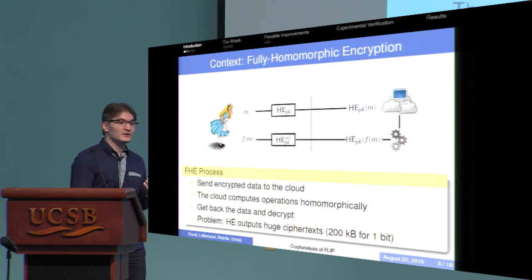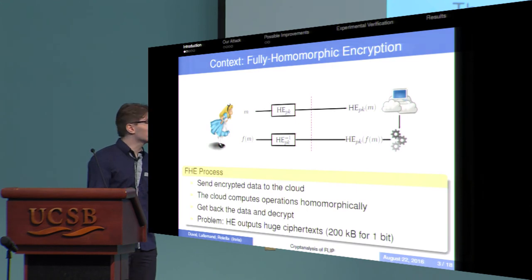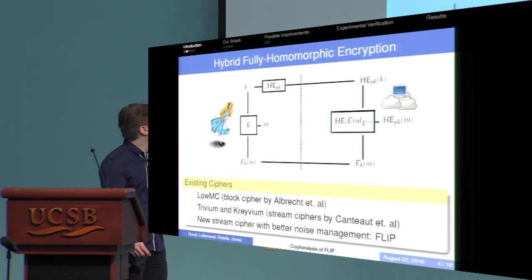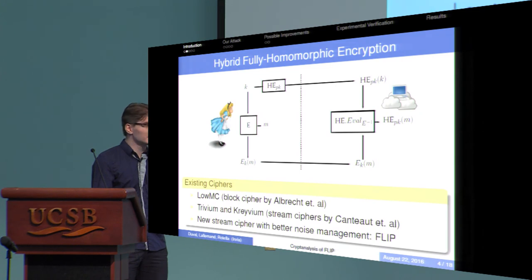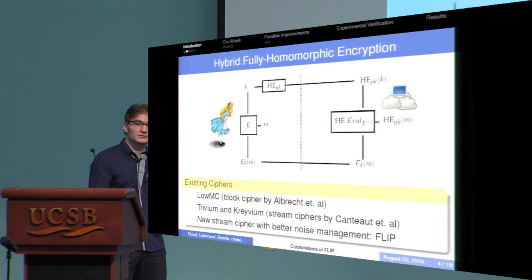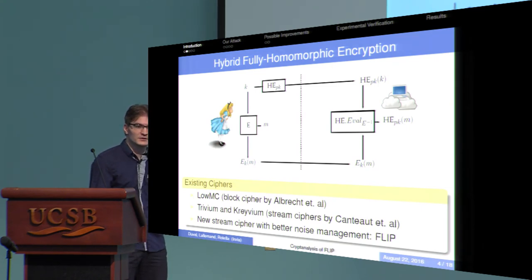There is one problem: the homomorphic encryption algorithms we have output huge ciphertexts. So if you have many messages or big messages, it's not going to be very practical. One way to go around this is to add a symmetric encryption on top of it. What you encrypt using the homomorphic encryption algorithm is the key to the symmetric encryption. That key is relatively small, of fixed size, and you send it only once, so that's not too costly.